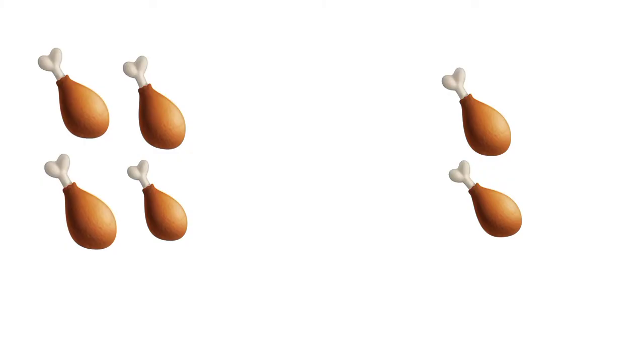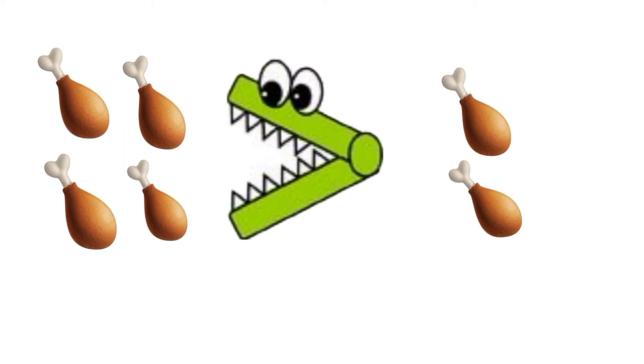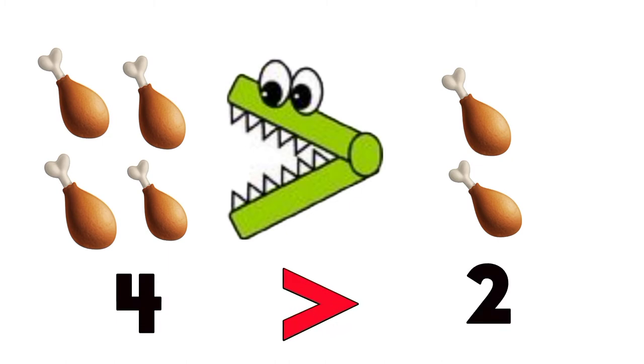Knowing that the hungry alligator wants to always eat more, its mouth shall face the set with more objects to eat. Have a look at the sets of fried chicken. The set at the right has 4 and the set at the left has 2. Definitely, the hungry alligator would like 4 fried chickens because it has more. So, we say that 4 is greater than 2.